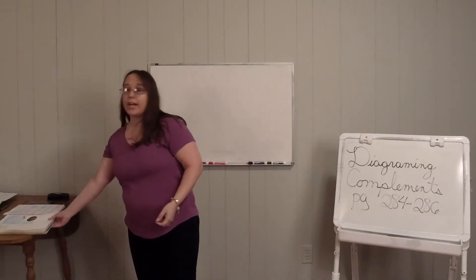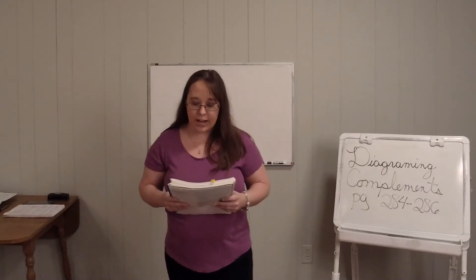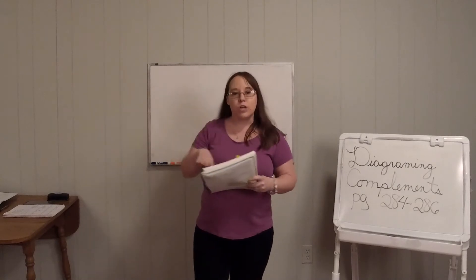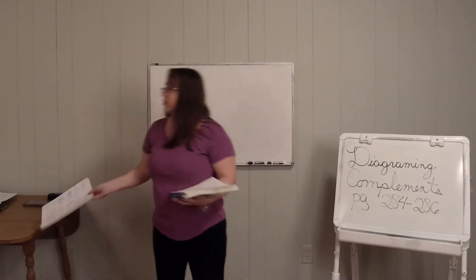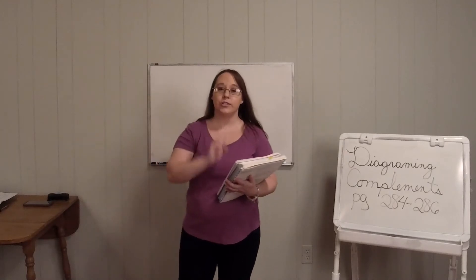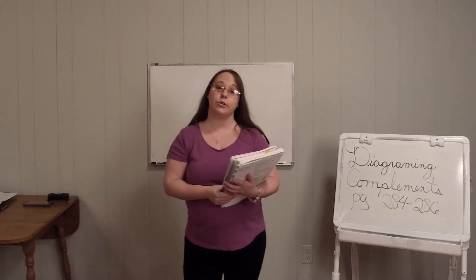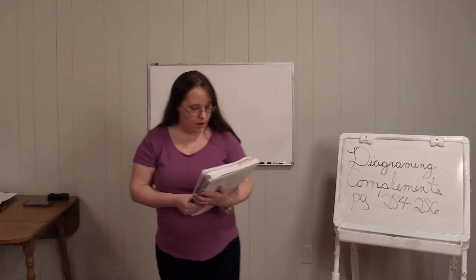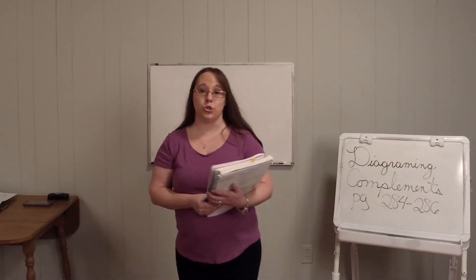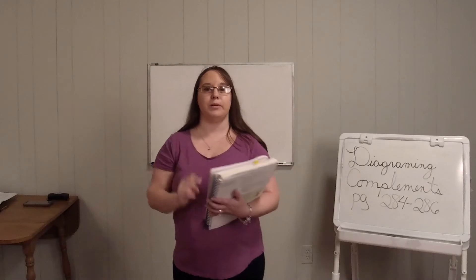We're on page 284 in your language book. We're going to learn to diagram the four kinds of complements and we're going to study these examples. I'm going to put them on the board and I'll talk you through them. You have to first remember what a direct object is — that's on page 271 if you need to look back. You need to know an indirect object on page 275, a predicate nominative on page 281, and a predicate adjective on page 282. You need to remember those four things, because those are the four types of complements that you can have.